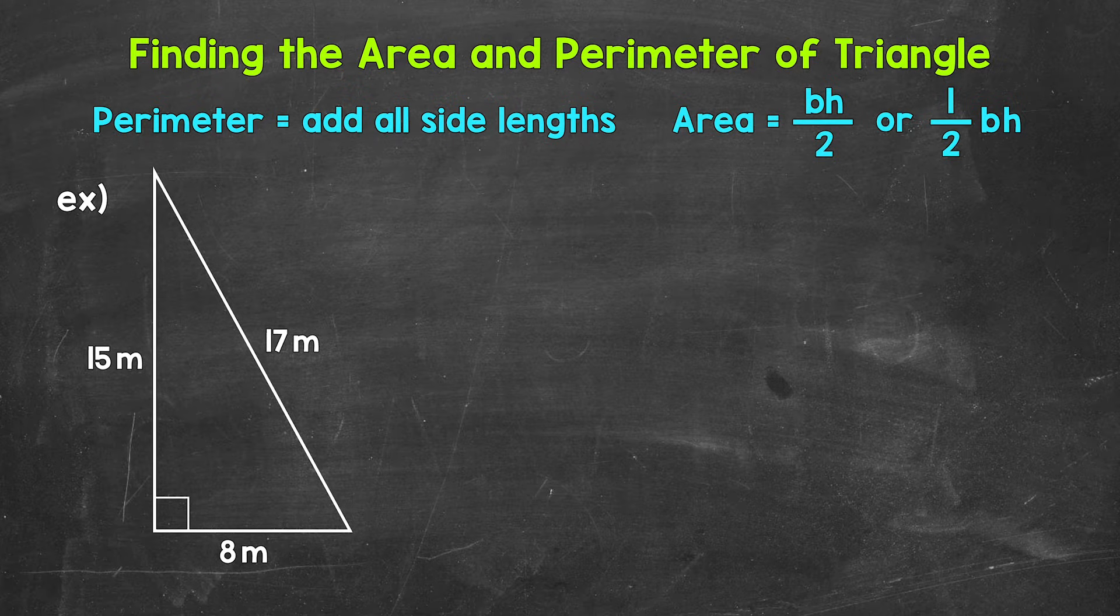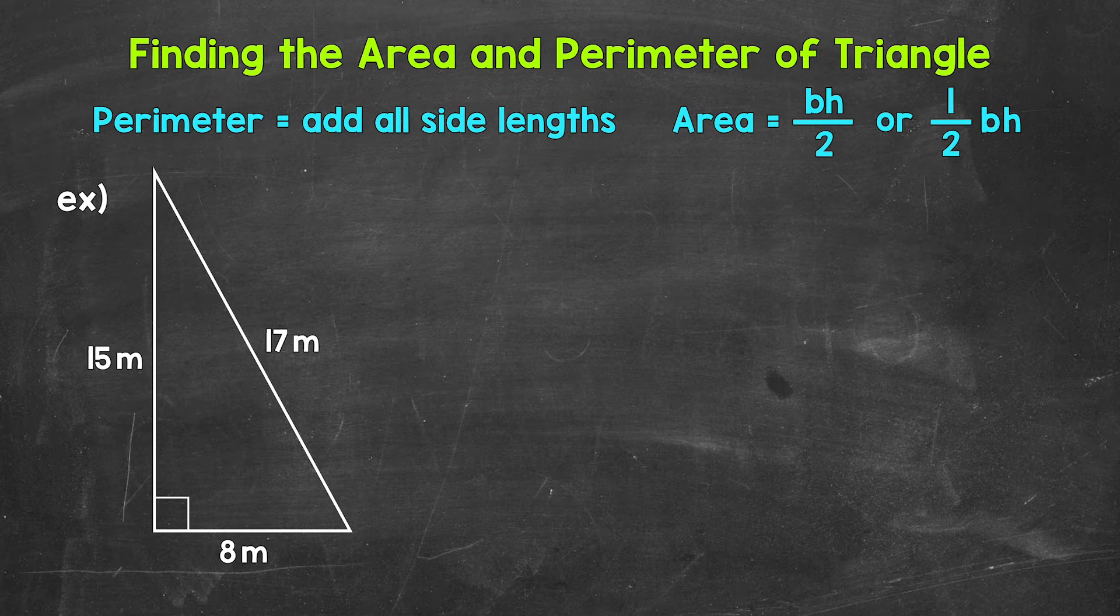Now, I go into more detail about finding the area of triangles and this formula in another video. That link is in the description. Let's jump into our example, and we will start by finding the perimeter of this right triangle.